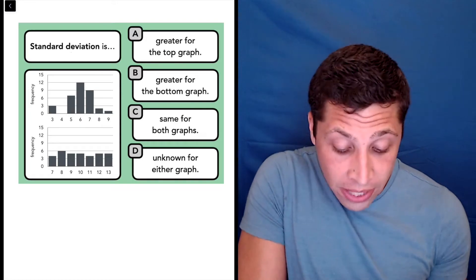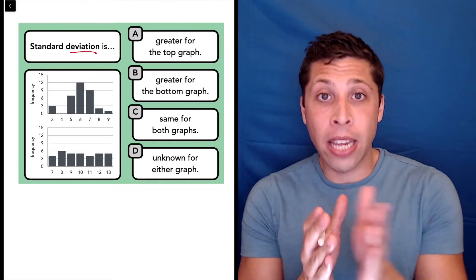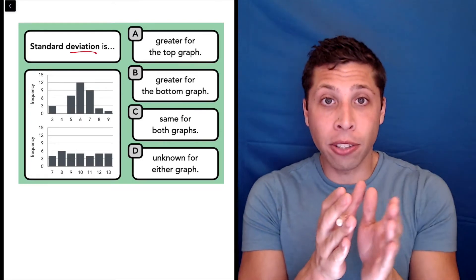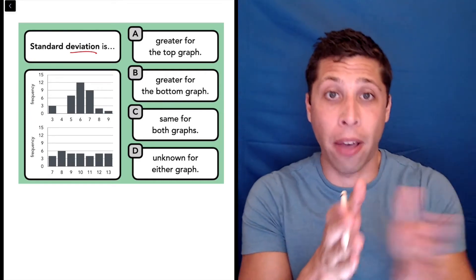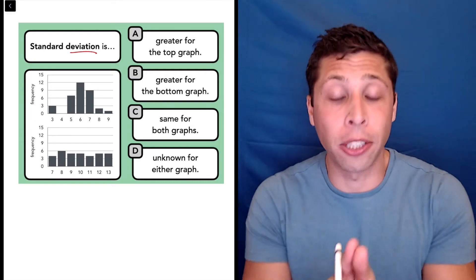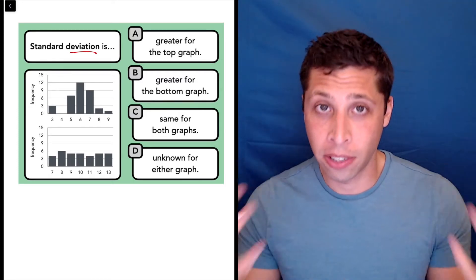Now focus on the word deviation. If something deviates, it kind of wanders off, right? So if you're walking a path and you deviate from the path, you're going off the path. You're going off that trajectory that you were on. The same is true for statistical data.